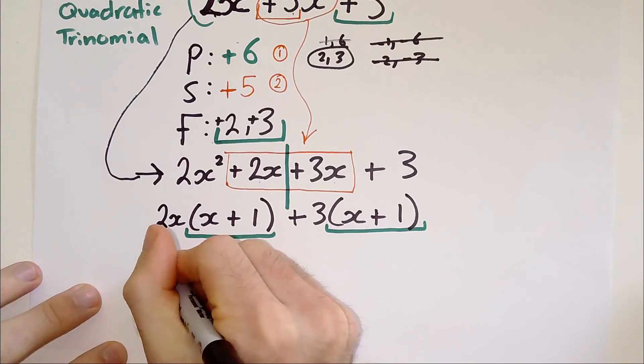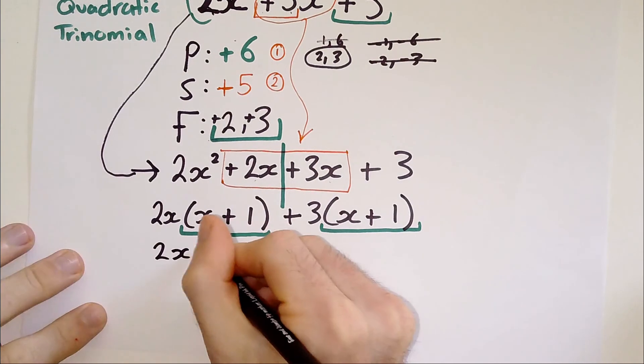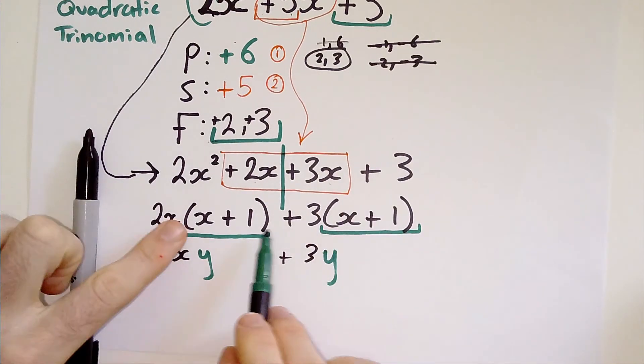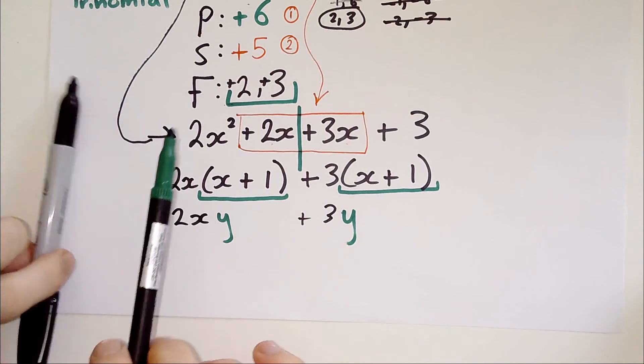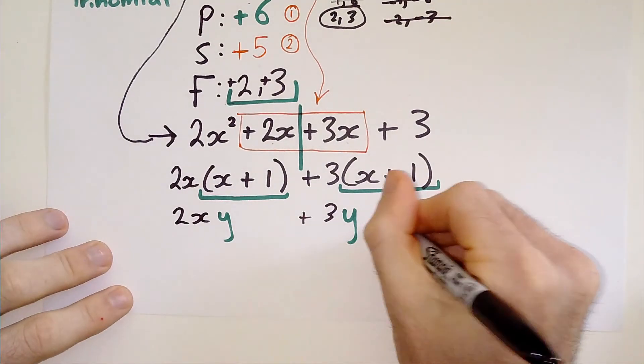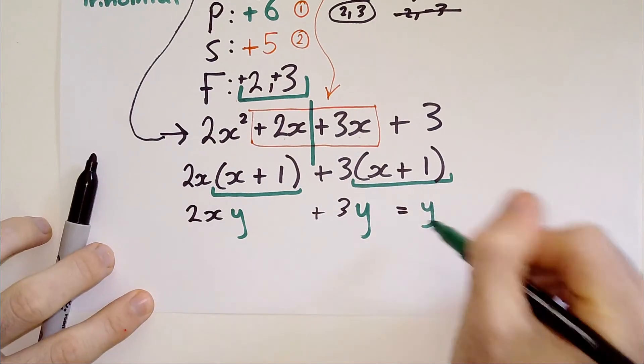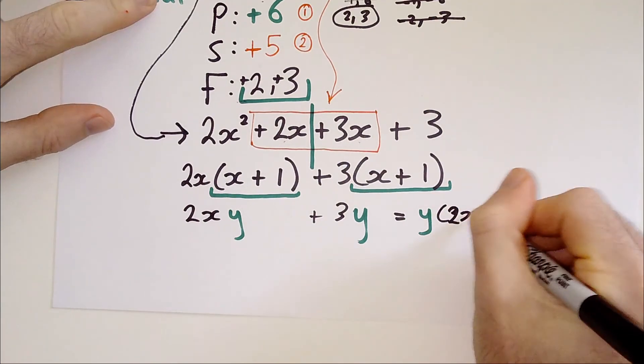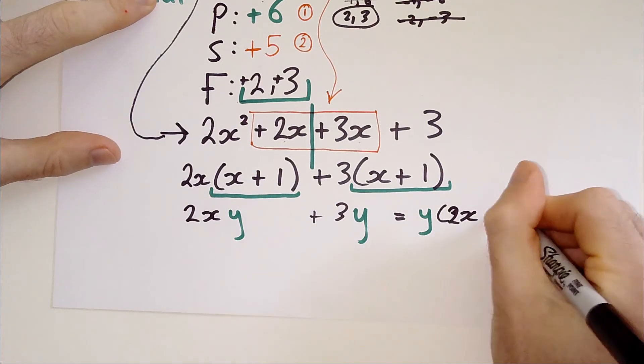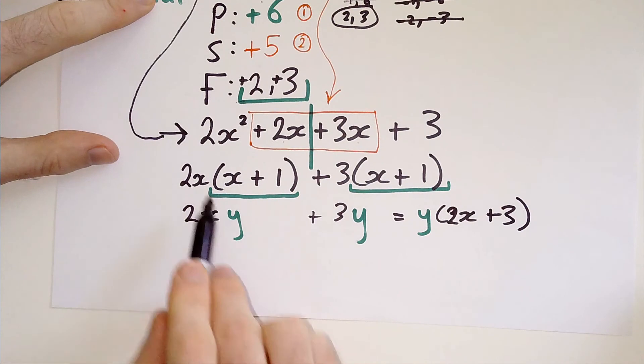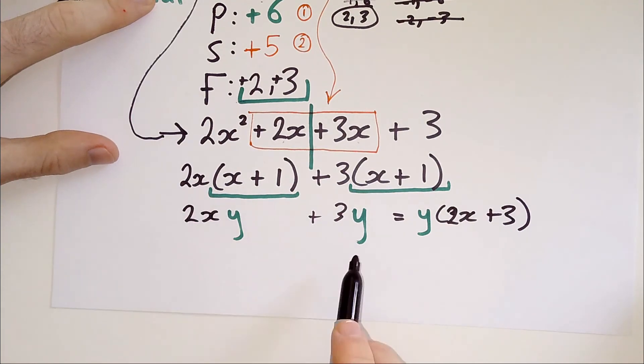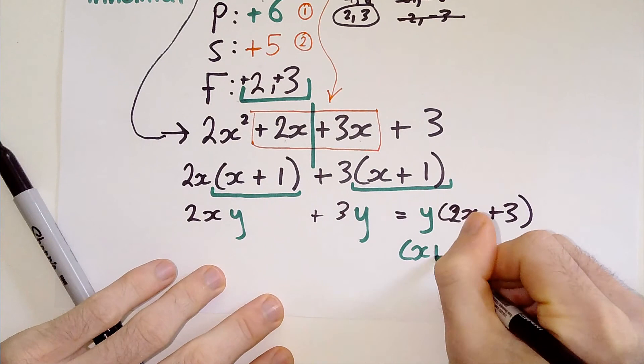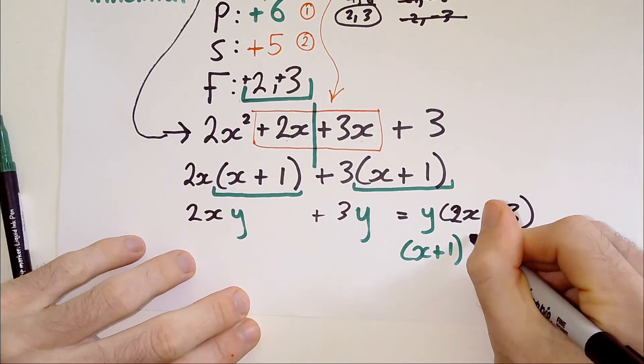What that means is that you can treat the bracket X plus one like its own term. Consider this, you could have two X Y plus three Y. I'm making the bracket X plus one equal Y here. If I had two X Y plus three Y, how would I factorize that? Well, I would take out the Y. So the Y, which is our bracket here, will come out and then it would be two X and plus three. Notice how I have factorized out the Y, which represents the bracket, the whole bracket it represents, X plus one.